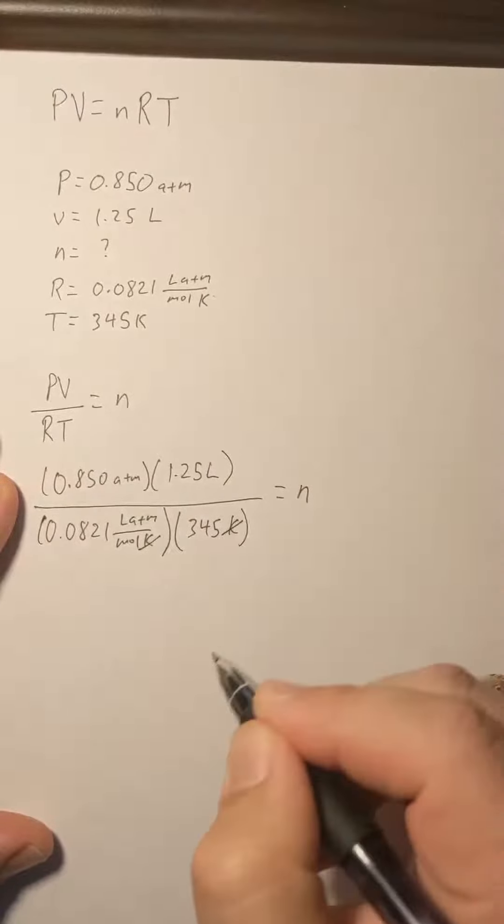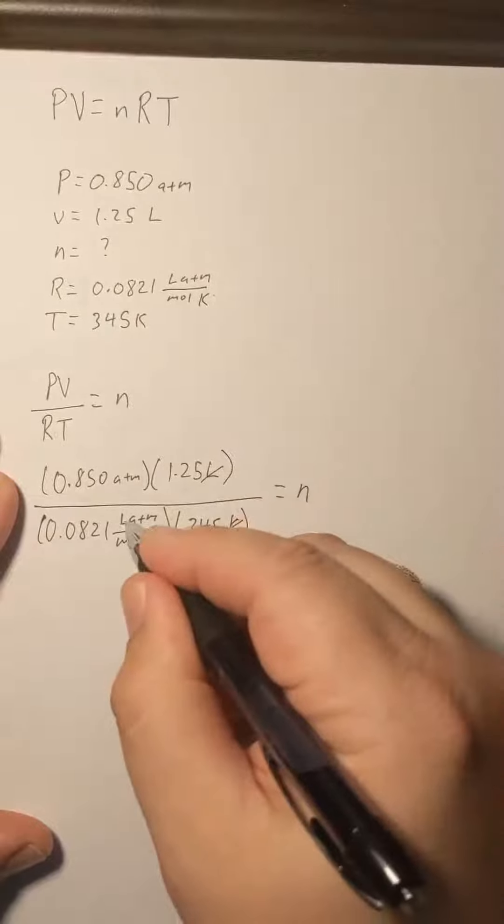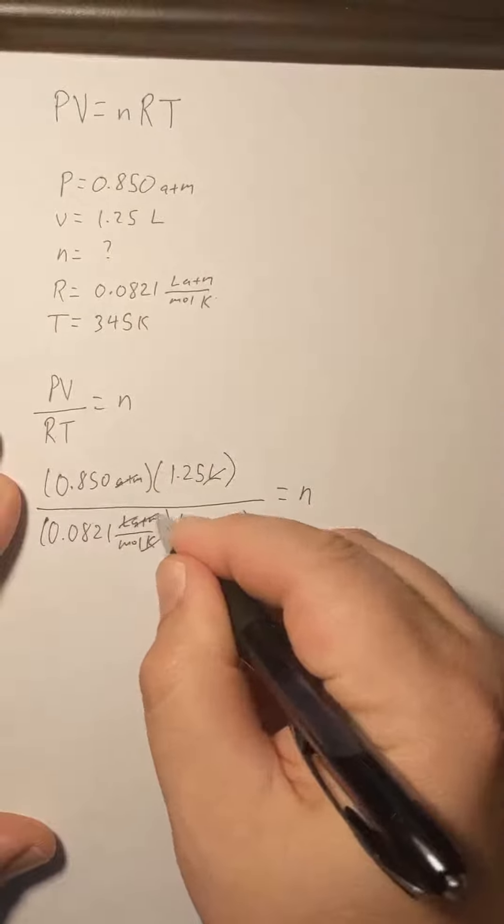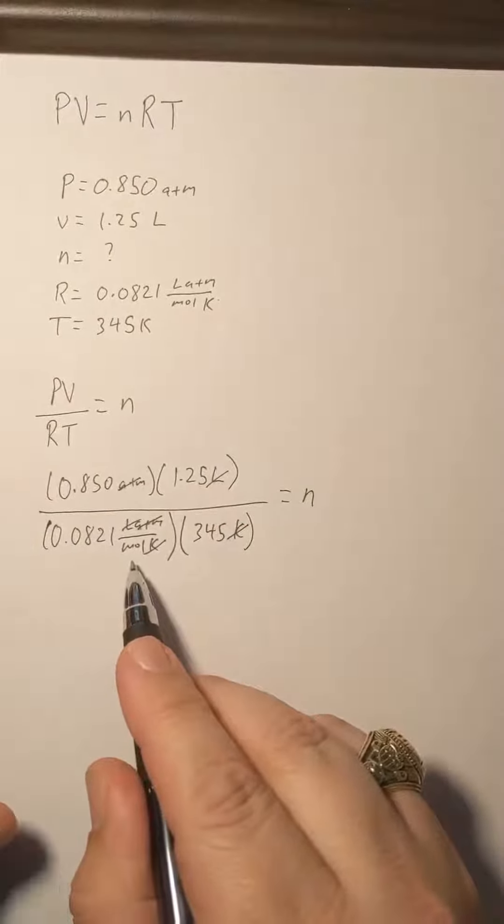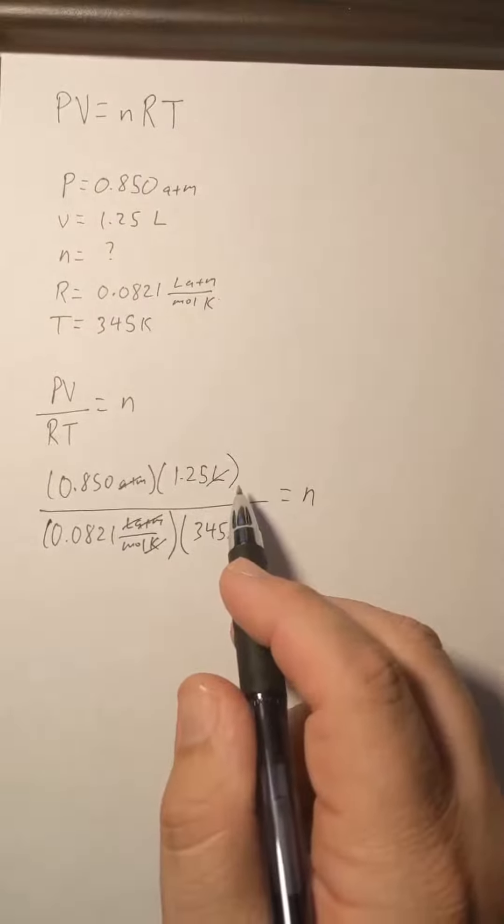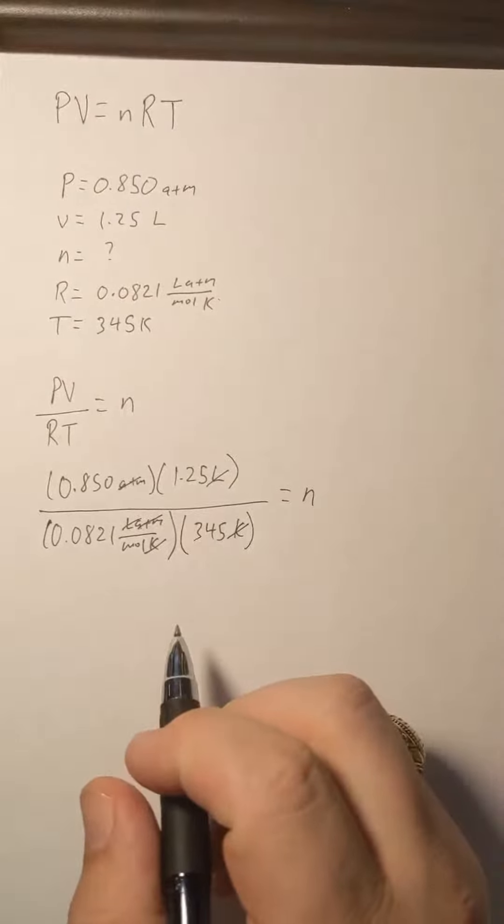So we see that our Kelvin cancels here, our liters cancel, our atmospheres cancel. And because moles is in the denominator of the denominator, it's going to wind up in the numerator after we do all of the division.